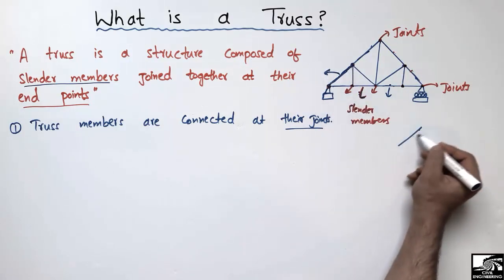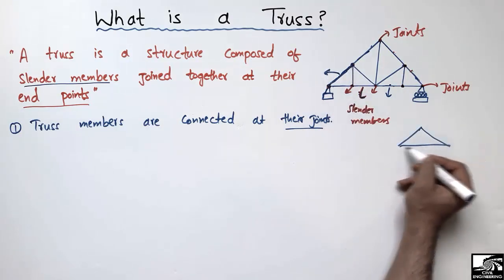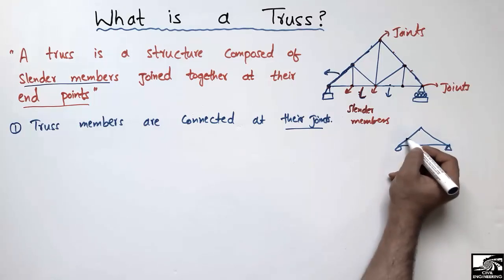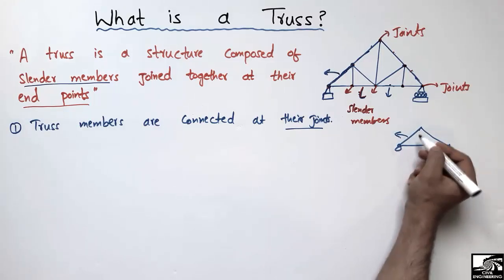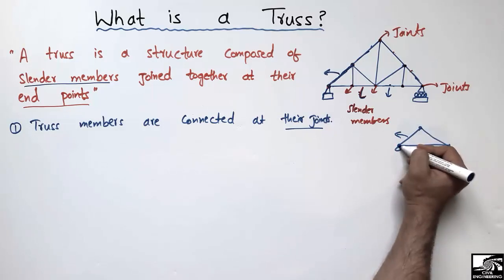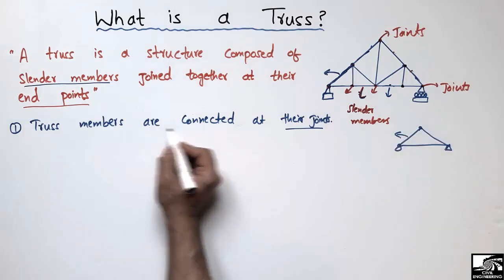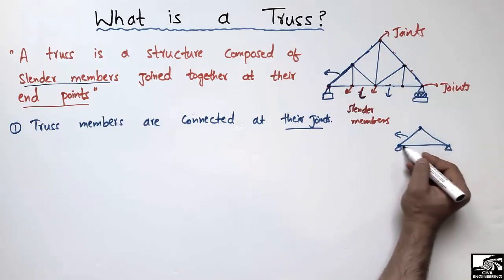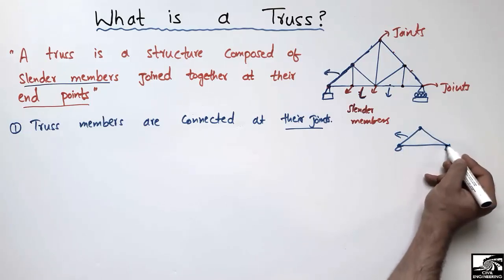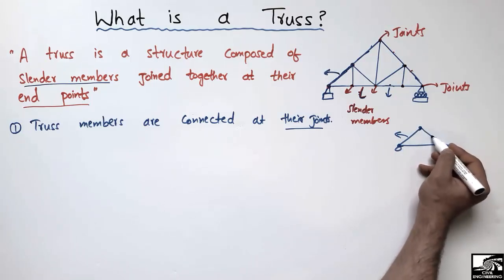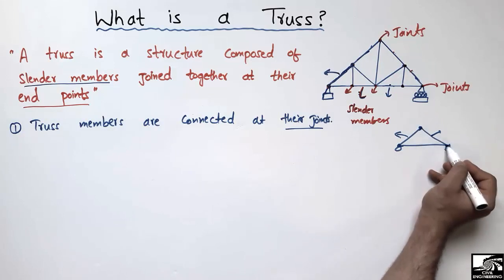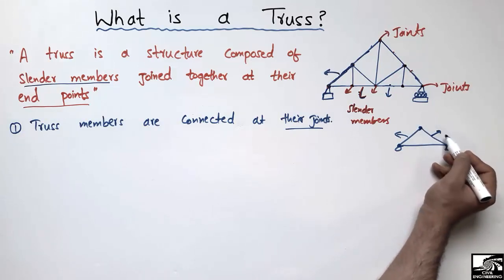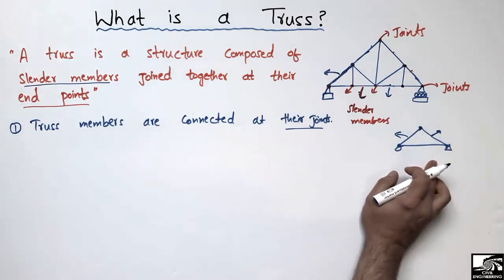Similarly, considering another member in the truss — it is connected by this joint and this joint, which are its end points. Truss members are always connected only at their joints, i.e., at their end points.